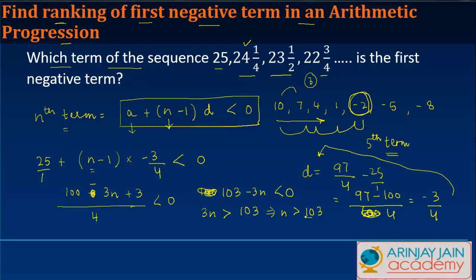Since n must be greater than 34⅓, it is the 35th term of this arithmetic progression that will be the first negative term in this sequence.